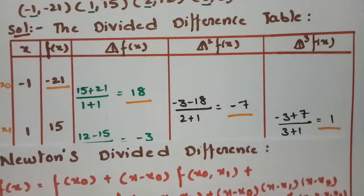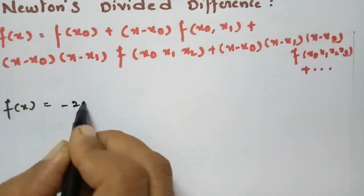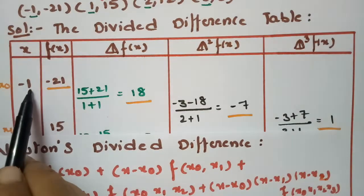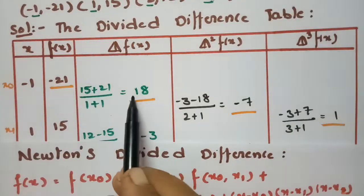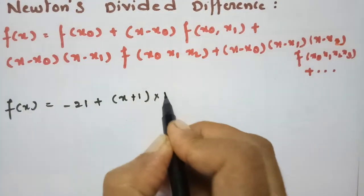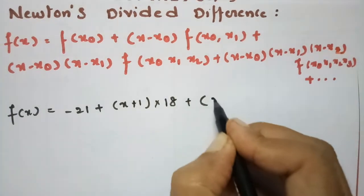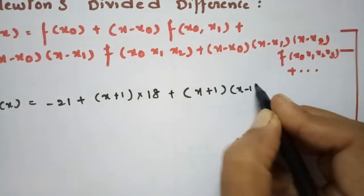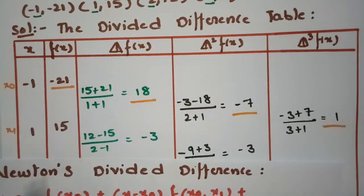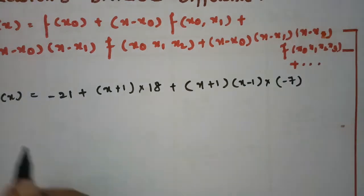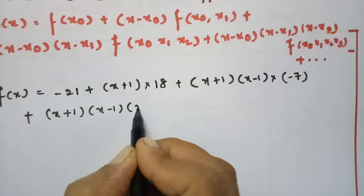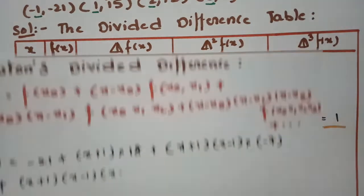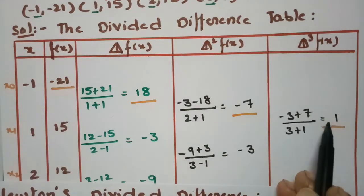Now substituting all the values: f(x₀) = -21. Then x - x₀ = x - (-1) = x + 1, with first difference 18. Next, (x + 1)(x - 1) with second difference -7. And (x + 1)(x - 1)(x - 2) with third difference 1. So f(x) = -21 + 18(x + 1) - 7(x + 1)(x - 1) + 1·(x + 1)(x - 1)(x - 2).